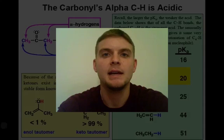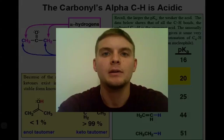A consequence of the acidic nature of these protons manifests itself in what is known as keto-enol tautomerization, a special kind of isomerization reaction that we'll learn about in this lesson.